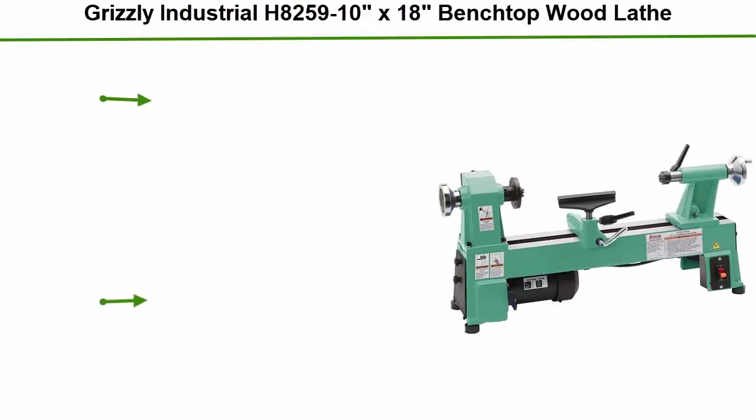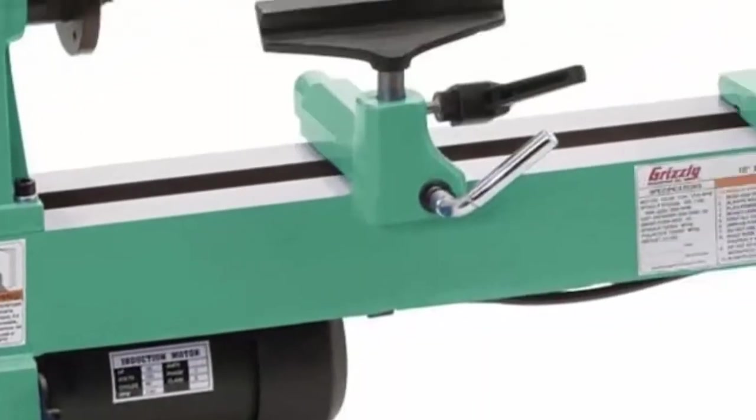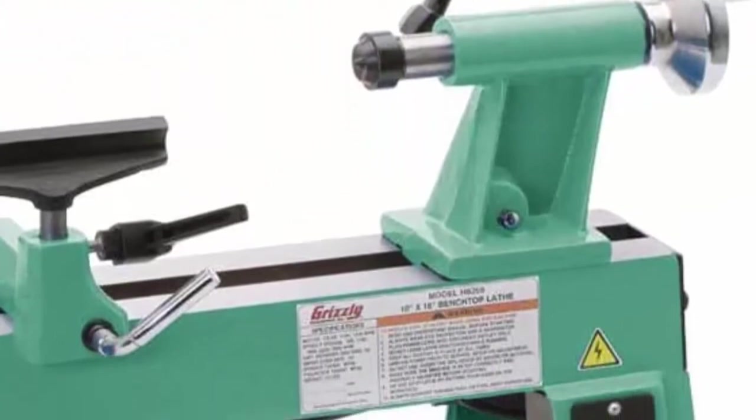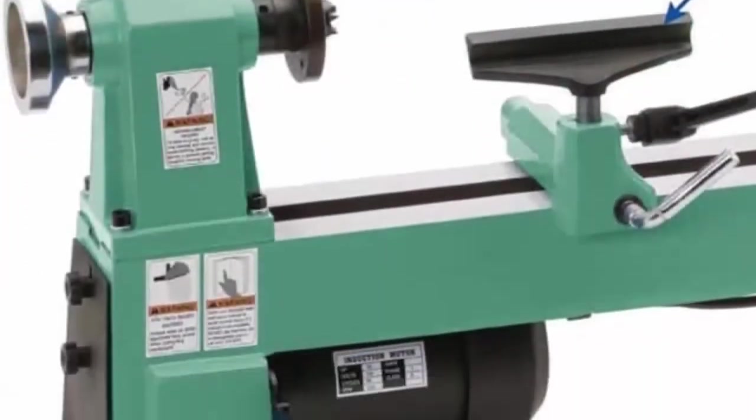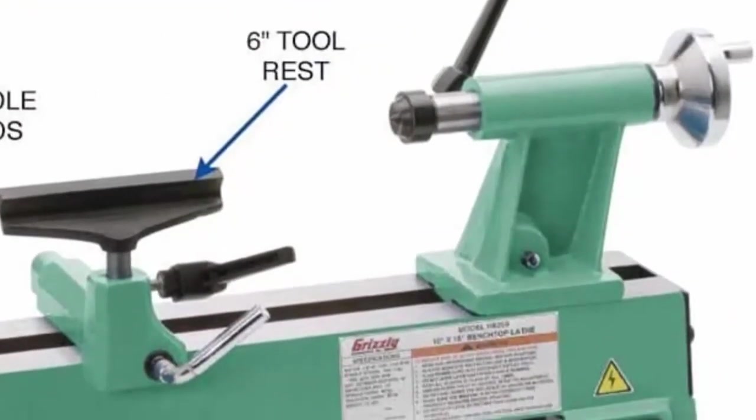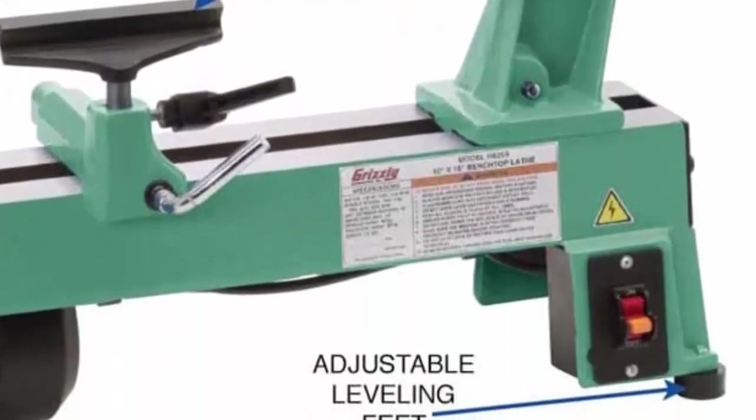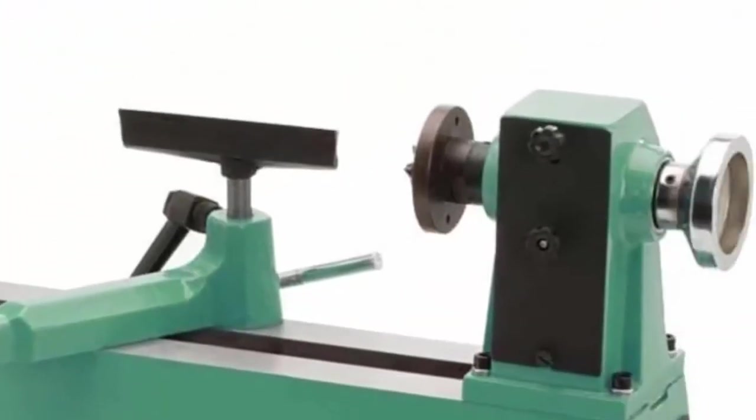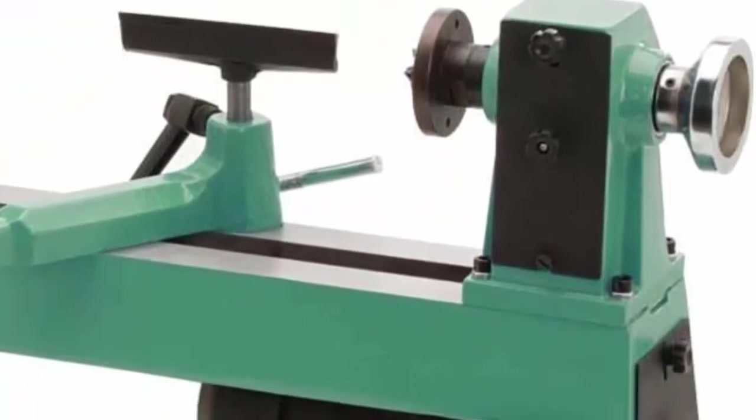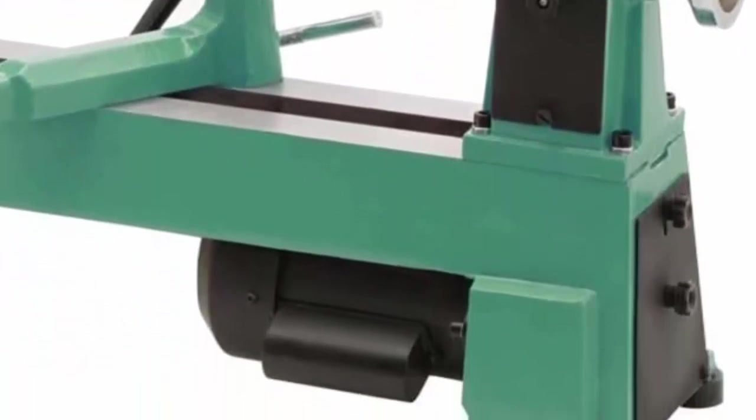Top 10: Grizzly Industrial H8259, 10x18 benchtop wood lathe. Motor: half HP, 110V single phase, 7 amps. Swing over bed: 10 inches. Distance between centers: 18 inches. Swing over tool rest: 6-1/4 inches. Top 9.